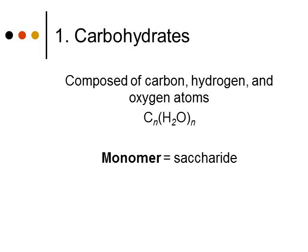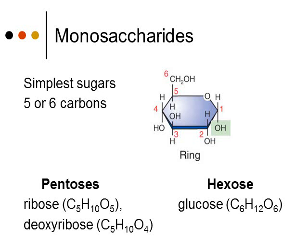The monomer for carbohydrates — remember, monomers are those building blocks — is called a saccharide, or a sugar. If you have one of these saccharides, it's called a monosaccharide. Mono means one, so just one saccharide. These monosaccharides are really simple sugars, and these are those 5- or 6-carbon rings.